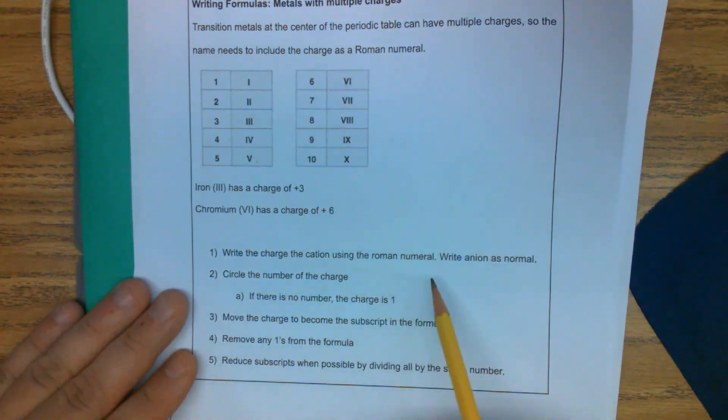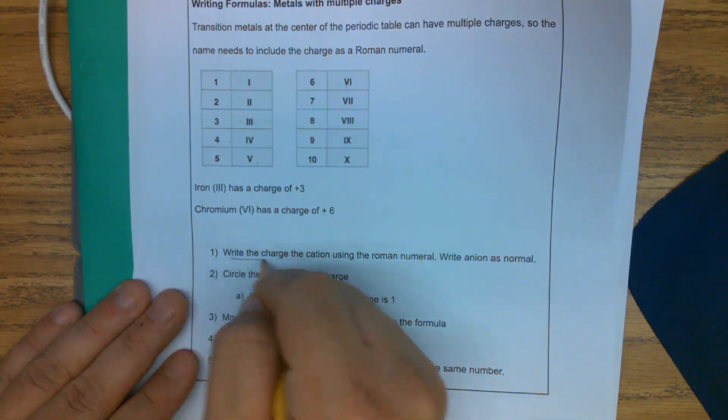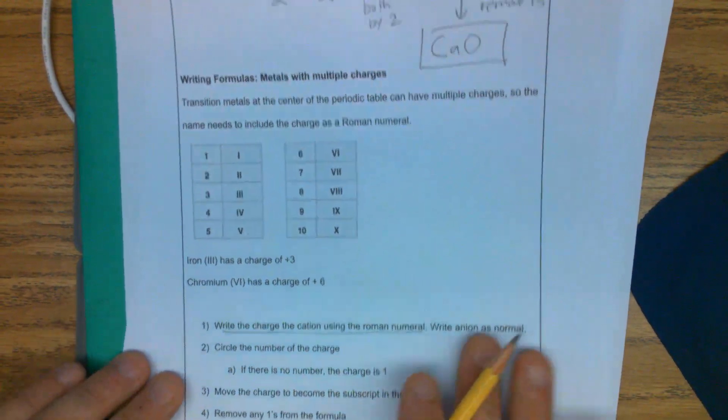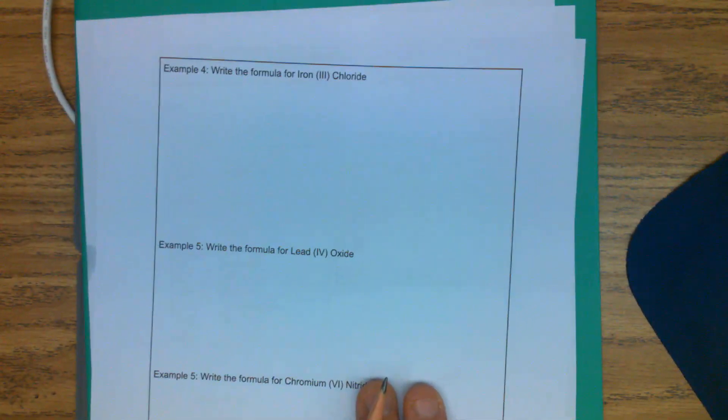All right. The only difference between this is this first part, we're going to write the charge of the cation using the Roman numeral and then write the anion as normal. So let's look at an example of this.